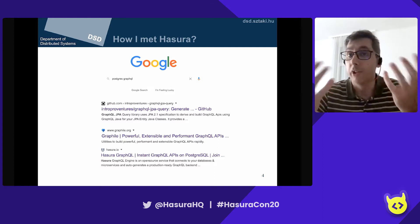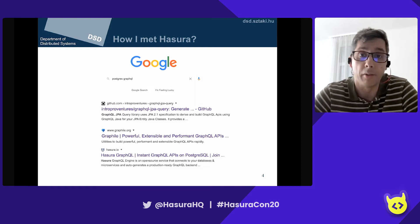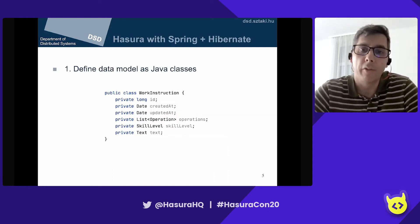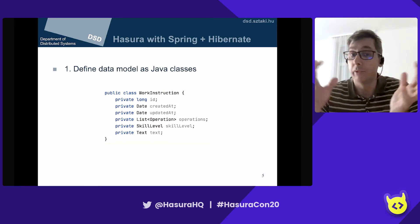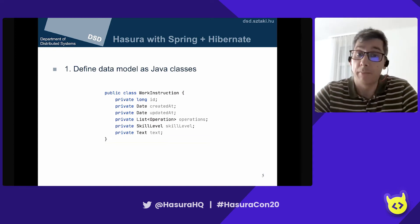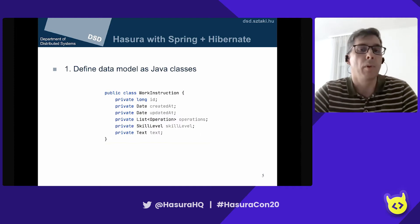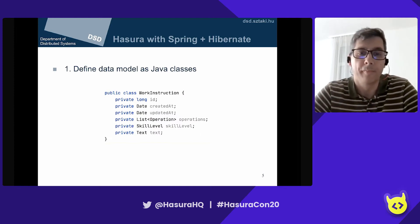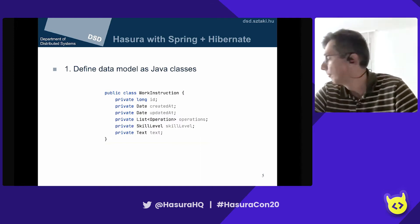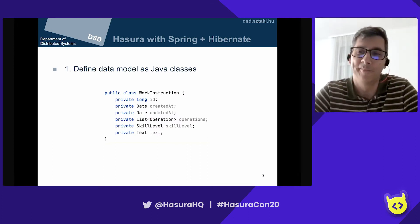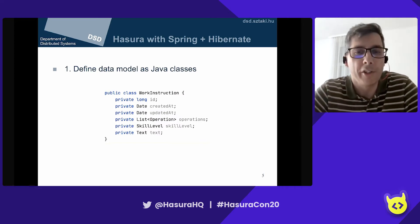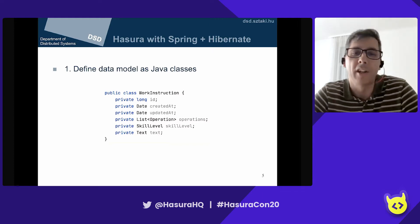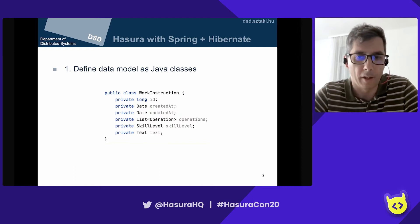But I wanted to use our usual Java workflow together with Hasura. My usual workflow is like this: we start off modeling our application from the Java side. We do not build a database first, but we model our things in Java.